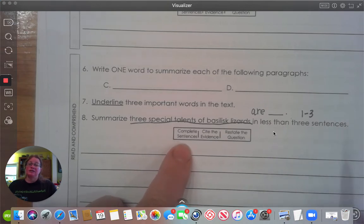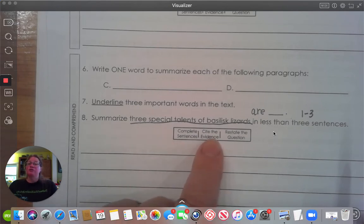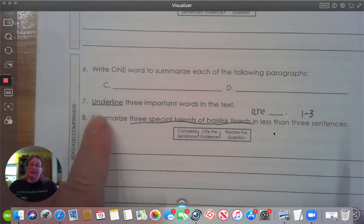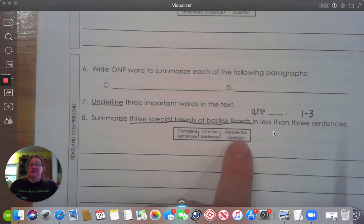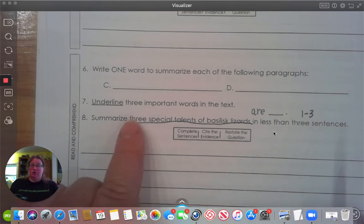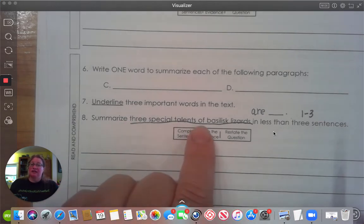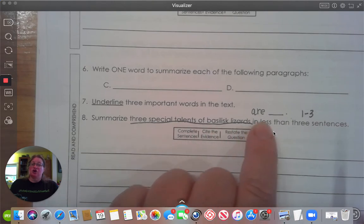Make sure you are using complete sentences with capital letters, punctuation, and five to seven words. Make sure that you are circling your evidence in your story. So go back to your story and circle the evidence and write the number eight next to your evidence. And restate the question. Three special talents of basilisk lizards are, and then finish that sentence.